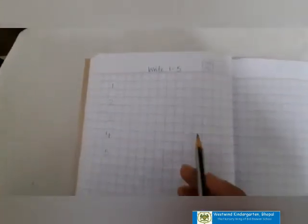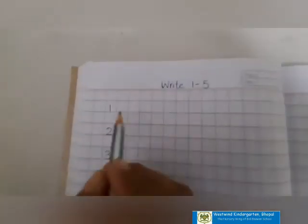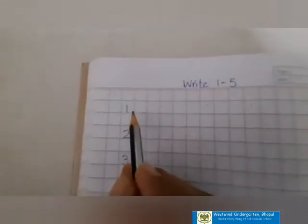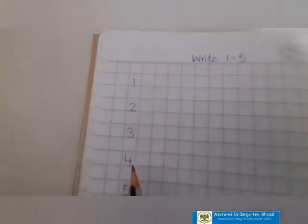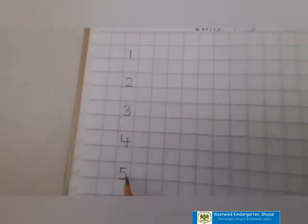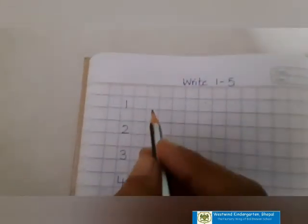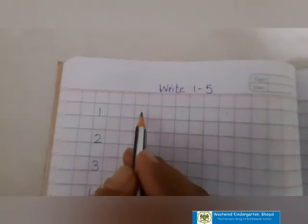Hello children. Welcome back in your maths class. Today we are going to write numbers 1 to 5 in your notebook. Open your notebook. So, children, see — numbers are written here. You have to start from here.